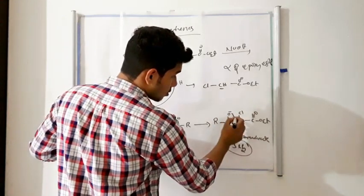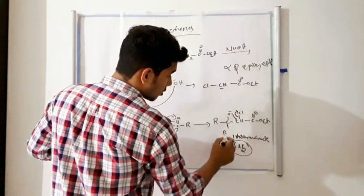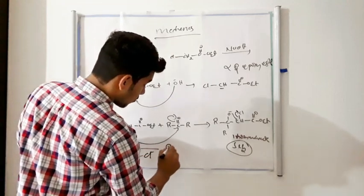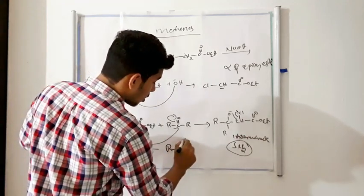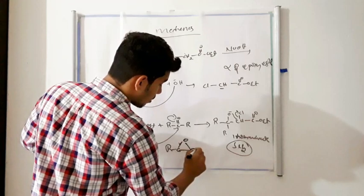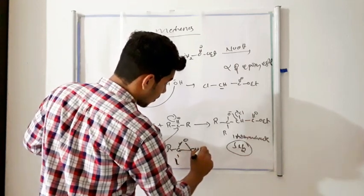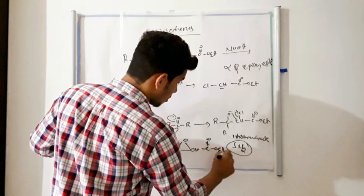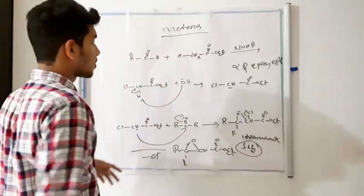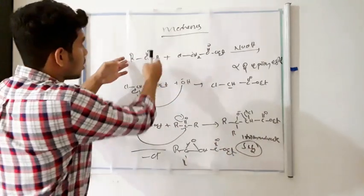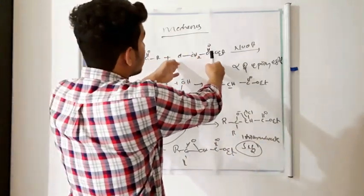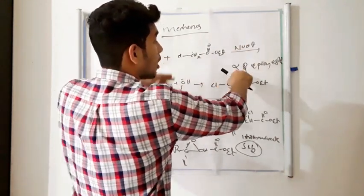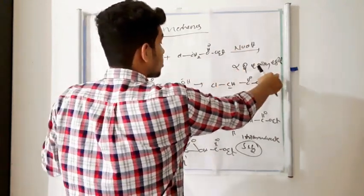The negative charge bond shifts and eliminates the Cl minus ion to form the alpha-beta epoxide ester. So, the carbonyl compound reacts with the alpha-halogenated ester in the presence of NaOH to form the alpha-beta epoxide ester.